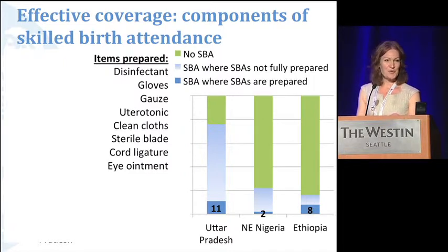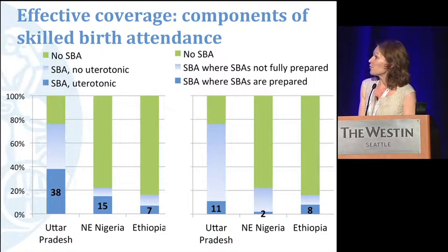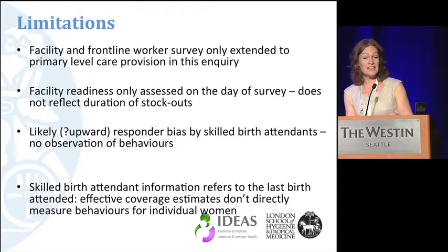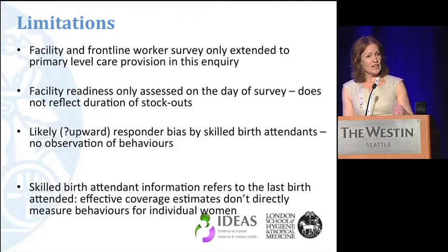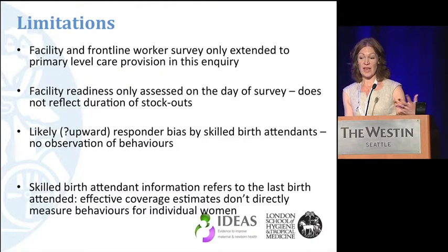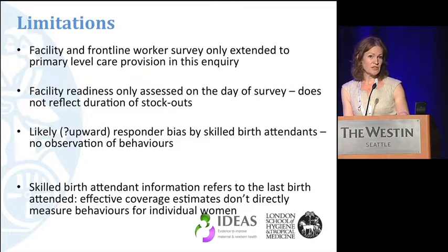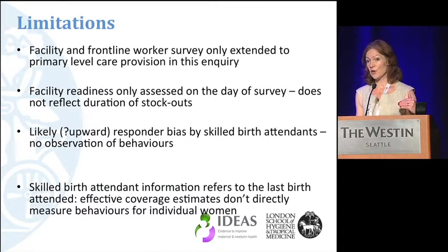Talking about limitations: within the IDEAS project, the survey only extended to primary level care, which was probably adequate in Ethiopia and Nigeria but may have missed higher levels in Uttar Pradesh. Facility readiness only reflects what we saw on the day of survey, which is common for any cross-sectional approach. By asking birth attendants about what they did at the last birth without observation, there's likely an upward bias in their reporting, so what we're seeing is the upper bound of effective coverage.